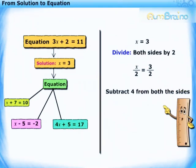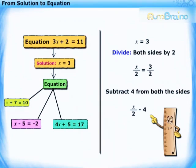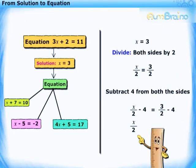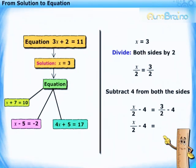Subtracting 4 from both the sides, we get x upon 2 minus 4 is equal to 3 upon 2 minus 4. By doing so, a new equation is formed as x upon 2 minus 4 is equal to minus 5 upon 2.